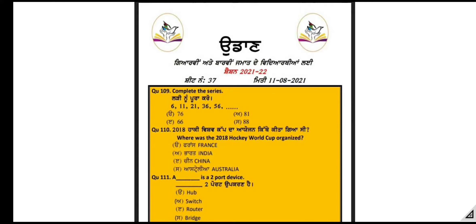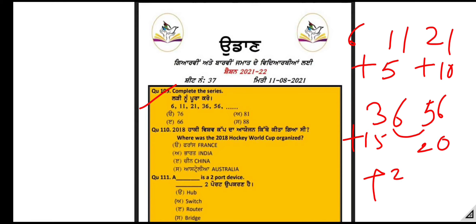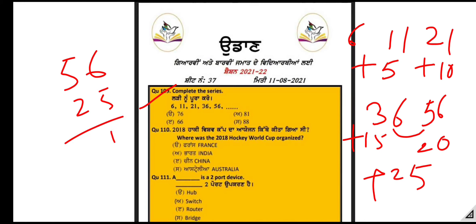The first question is: complete the series 6, 11, 21, 36, and 56. This series follows a pattern — 6 to 11 is plus 5, then 21 is plus 10, next 36 is plus 15, next 56 — the difference of 56 and 36 is 20. So in the next term, the difference is 25, meaning 56 plus 25 equals 81.